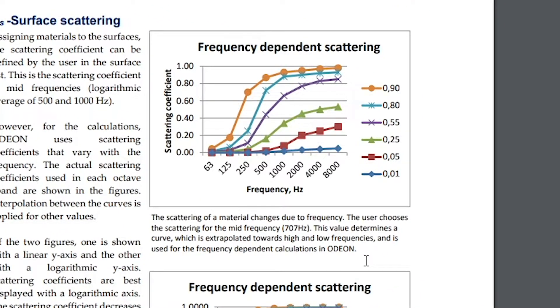For example, if we enter a scattering coefficient of 0.55, we would obtain the purple curve. Due to the logarithmic x-axis, 707 Hz would be exactly between 500 Hz and 1 kHz. Then, at 2 kHz, this would give a scattering of approximately 0.75.